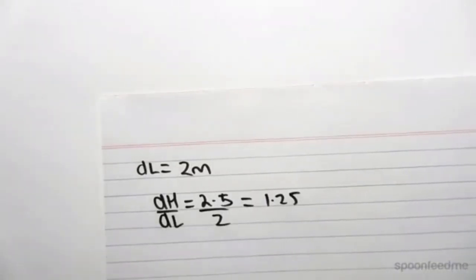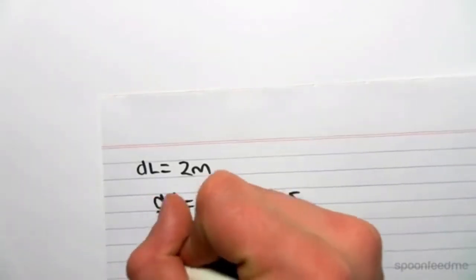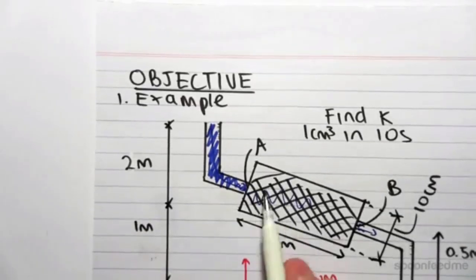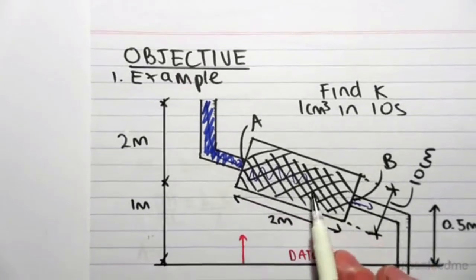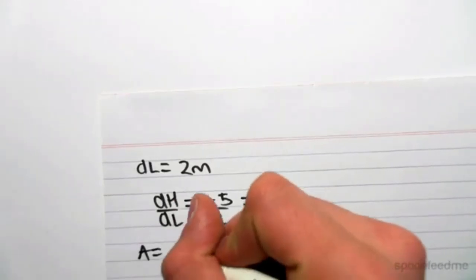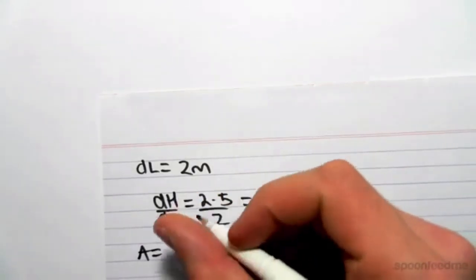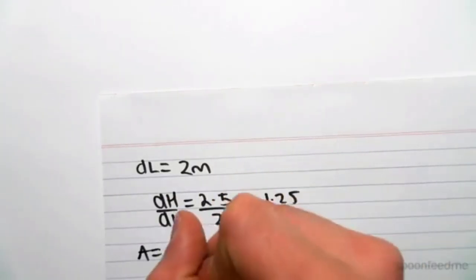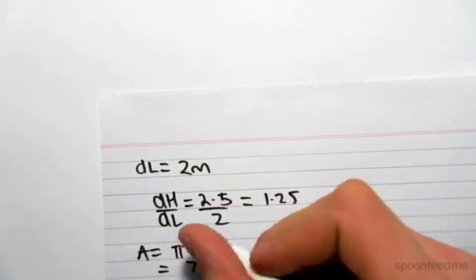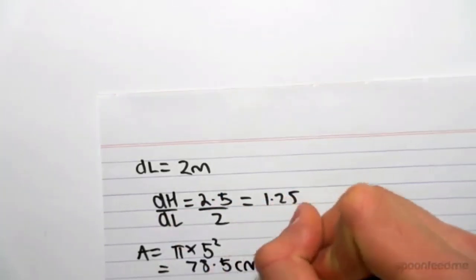So we have dH and dL, we have Q. The last thing we need is the area. So the area in which this passes through, the area of this cylinder. So we're going to assume it's a cylinder. Its diameter is 10 centimeters, which means that the area will be pi by r squared, where r is 5 squared. This is obviously in centimeters.